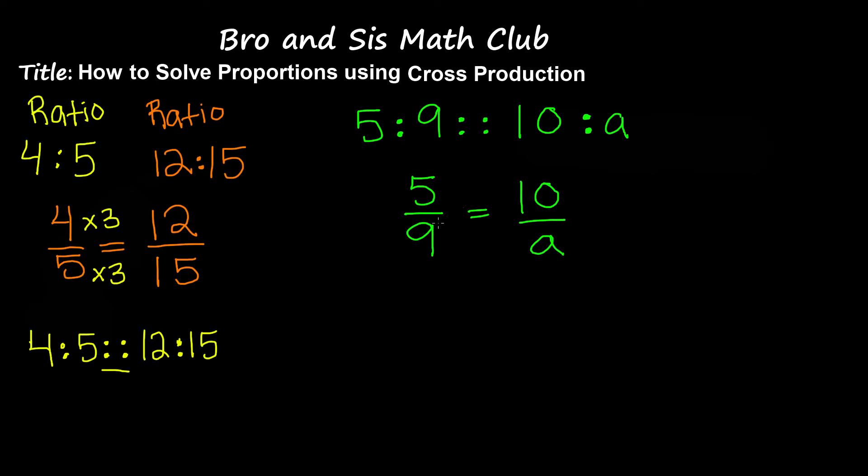Now we're going to use cross-production. That means I'm going to multiply 5, which is the numerator, by A, which is the denominator, and then multiply 9, which is the denominator, by 10, which is the numerator. When I do so, 5 times A gives us 5A, and 9 times 10 gives us 90.